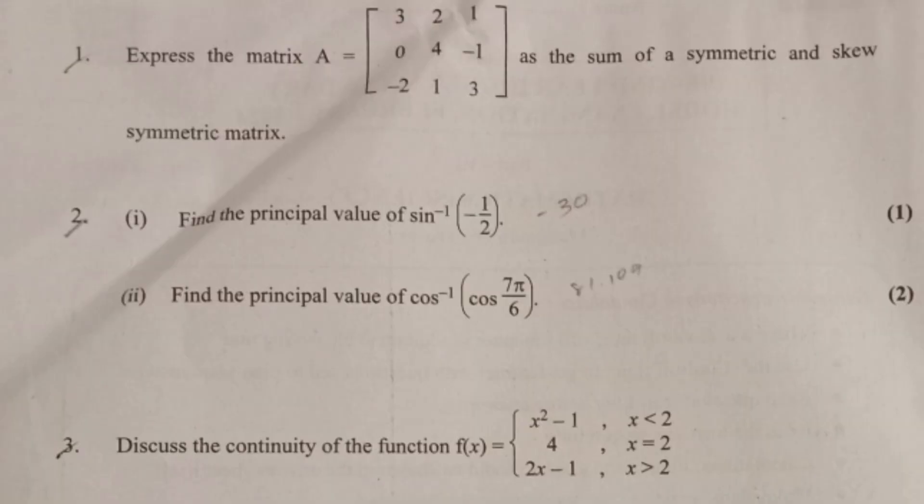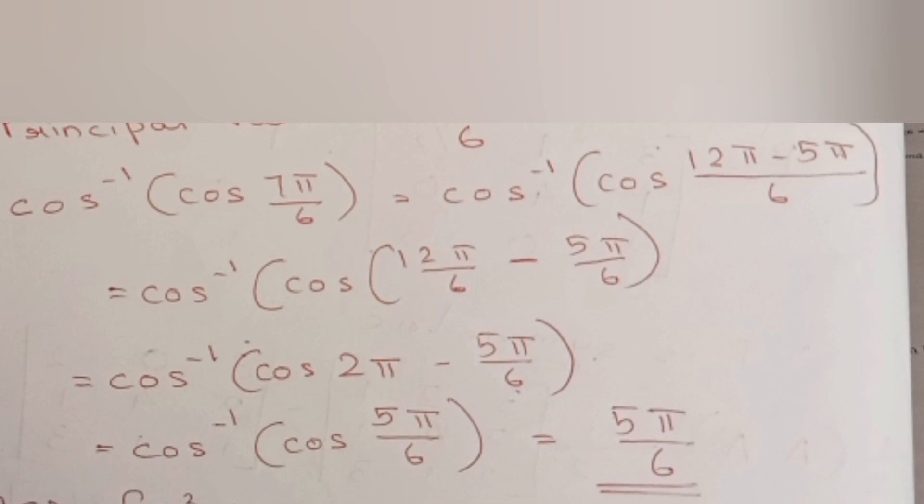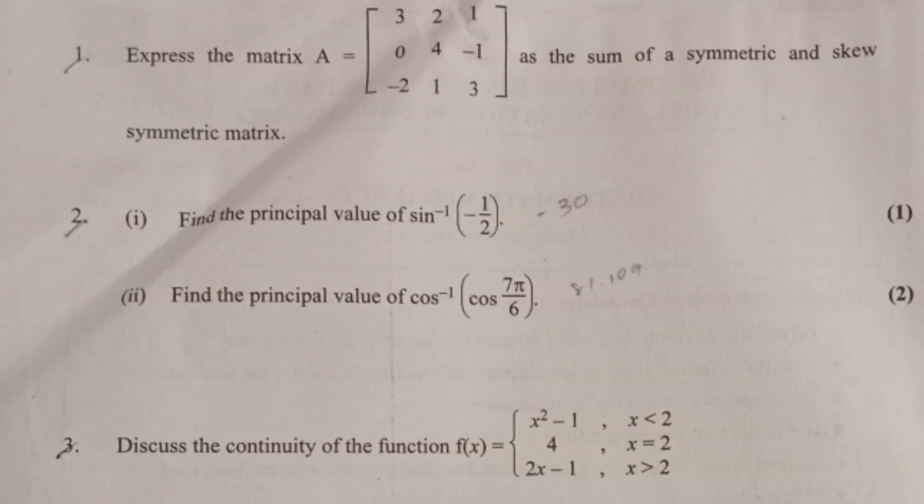Find the principal value of cos inverse(cos 7π/6). Answer: cos inverse(cos 7π/6) equals cos inverse(cos(12π/6 minus 5π/6)) equals cos inverse(cos(2π minus 5π/6)) equals cos inverse(cos 5π/6), which equals 5π/6.